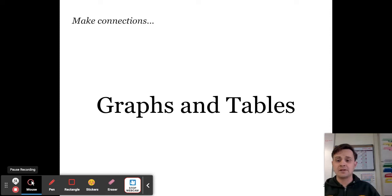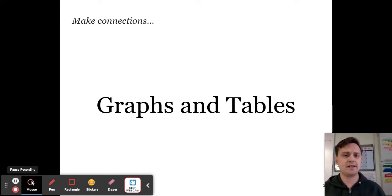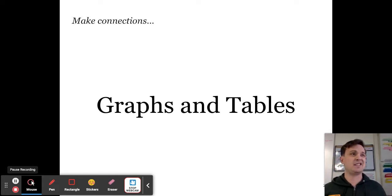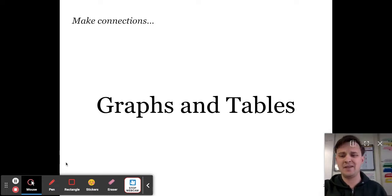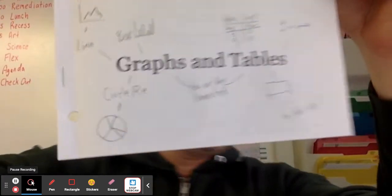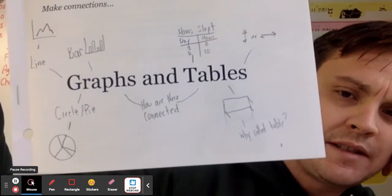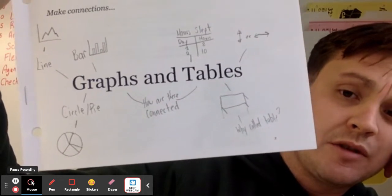Our first task, as always, is to make connections to what we already know. This time we're talking about graphs and tables, so you're writing down words that you connect to graphs and tables, pictures that connect to graphs and tables, things you've learned in math class before, things you've just seen in class. Go ahead and pause and give yourself at least five minutes to do that. Here's maybe what yours might look like — I've connected line and bar graphs, there's an example of a table, and they can be horizontal or vertical.